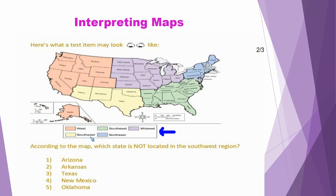Then we have Southwest, which is indicated by the color yellow, so anything coded in yellow indicates states in the Southwest region. Then we have Southeast, which is colored green; Northeast, which is colored blue; and the Midwest, which is indicated by the color purple. Once we've reviewed our map key and applied it to our map, we want to reread our question and identify the key terms so that we're able to answer the question.